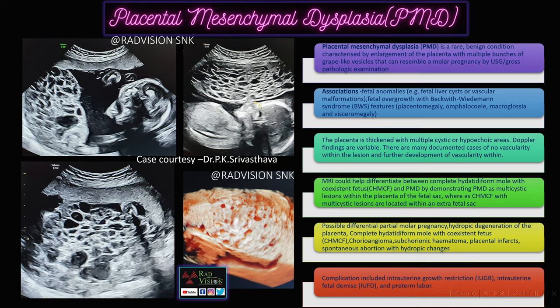Placental mesenchymal dysplasia is a rare benign condition where multiple grape-like cystic vesicles mimic molar pregnancy. Associations include fetal liver cysts, vascular malformations, and Beckwith-Wiedemann syndrome. The placenta is thickened with multiple cystic spaces that may or may not show vascularity. Common differentials include hydropic degeneration of placenta, complete hydatidiform mole with co-existent fetus, chorionangioma, subchorionic hematoma, placental infarcts, and spontaneous abortion with hydropic changes. MRI helps differentiate PMD from CHMCF: in PMD, cystic lesions are within the placenta, whereas in CHMCF, cystic lesions are located within an extra-fetal sac outside the placenta.